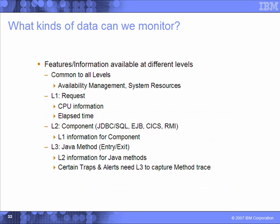What kinds of data can we monitor? Level 1 gives you request data — CPU information of applications, elapsed time, that kind of data. Level 2 gives you component-based information, going into the JDBC and SQL transactions, and it gives you the level 1 information for each of the components. Level 3 gives you your Java method data — method-level tracing, stack-level tracing — so you can capture and isolate even the line number that is causing the problem.